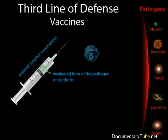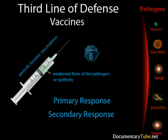When the body is first exposed to a pathogen, the B cells will produce a primary response. This response fights the infection and produces memory B cells. The memory B cells will then produce secondary responses if the pathogen infects the body again.